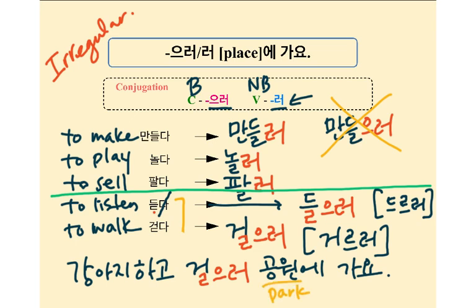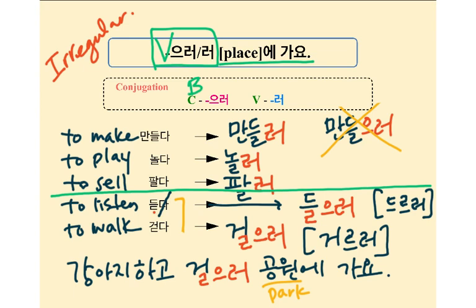Verb 으러/러 place에 가요 — I go to this place to do this action. Summary: 받침 → 으러. No 받침 → 러. ㄹ 받침 → 러, not 으러. ㄷ 받침 → change ㄷ to ㄹ, add 으러. 네 여러분 공부해요. 감사합니다. Bye!